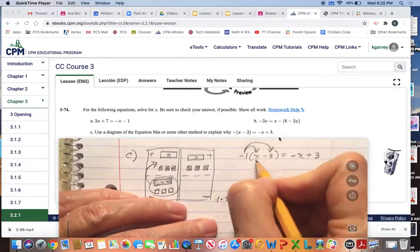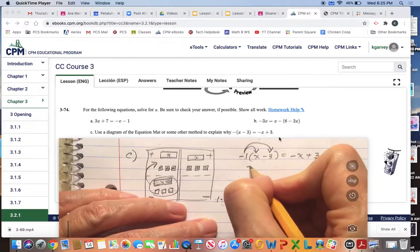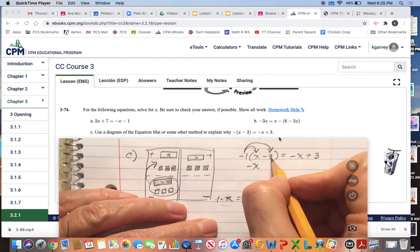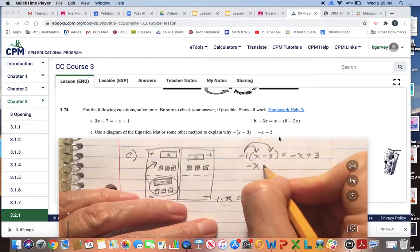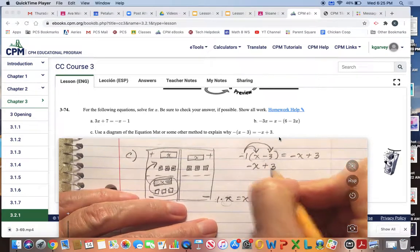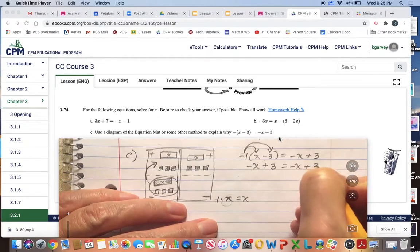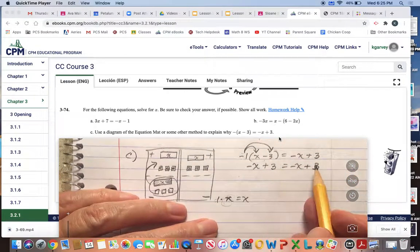Negative one times x is going to make that a negative x. Negative one times negative three makes that a positive three. And so now you can see that these two sides are equivalent.